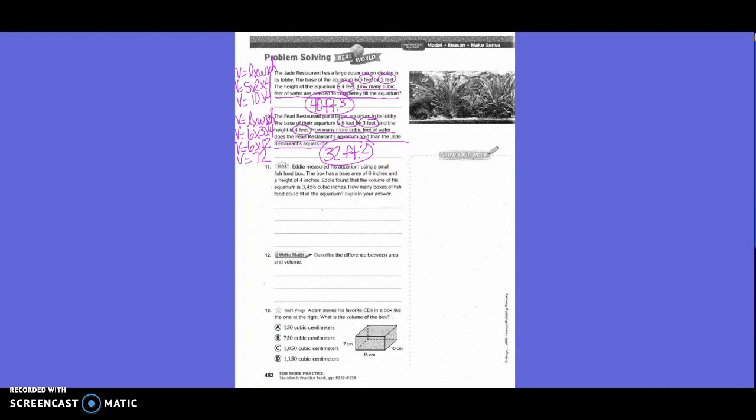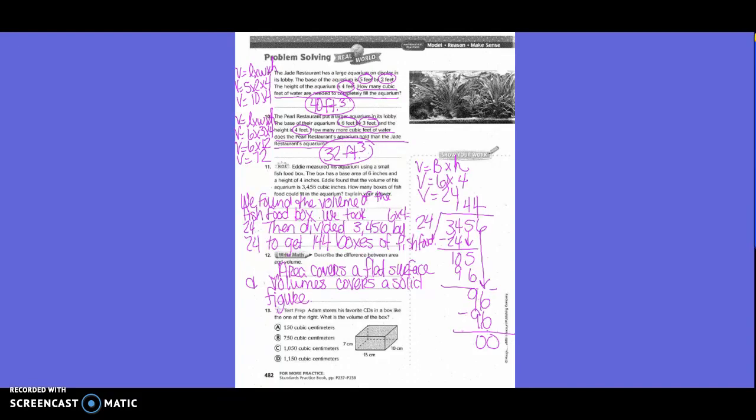Number 11. Eddie measured his aquarium using a small fish food box. The box has a base area of 6 square inches and a height of 4 inches. Eddie found that the volume of his aquarium is 3,456 cubic inches. How many boxes of fish food could fit in the aquarium? Explain your answer. So over here we did volume equals base times height. Volume equals 6 times 4. Then we found out that the volume of the fish food box is 24. So we took 3,456 divided by 24 and came up with 144 boxes of fish food. Number 12. Describe the difference between area and volume. Area covers a flat surface and volume covers a solid figure.